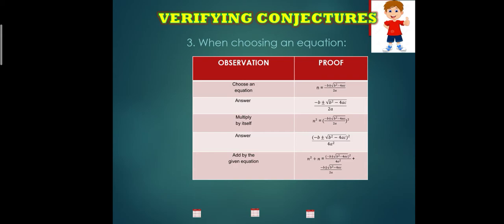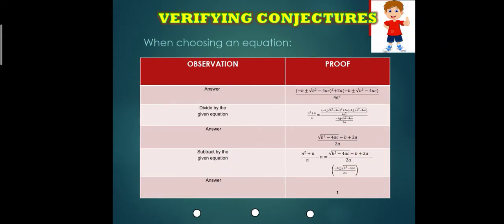After that, you add it to the given quadratic formula. Then you divide it to the given quadratic formula. Again, the quadratic formula is negative B, positive and negative square root of B squared minus 4AC all over 2A. After subtracting by 1, your answer will be 1.